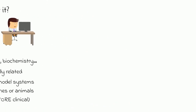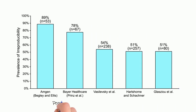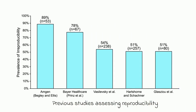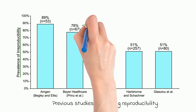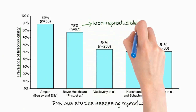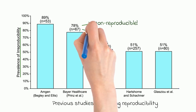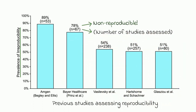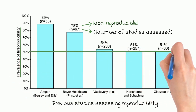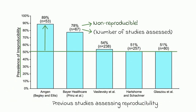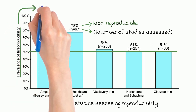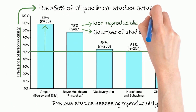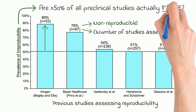They start with a simple summary of studies that have, in various ways, attempted to define the amount of irreproducibility in pre-clinical research. Each bar shows the percentage of non-reproducible studies out of the total number of studies investigated within each review. As you can see, they vary quite a bit, from 51 to 89%. But even at the lowest estimate, does that mean that the results for more than half of all medical-related biological studies are actually false?